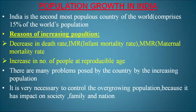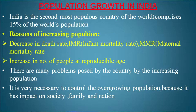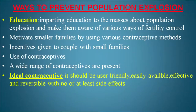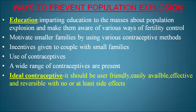India is the second most populous country in the world, comprising 15% of the world's population. The reasons behind increasing population are: decrease in death rate, decrease in IMR (Infant Mortality Rate) and MMR (Maternal Mortality Rate), and an increasing number of people at reproductive age. To control the growing population, the first method is education — imparting awareness about population explosion, motivating smaller families, and using contraceptive methods. Incentives should be given to couples with small families.